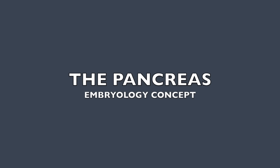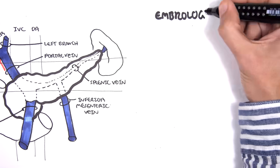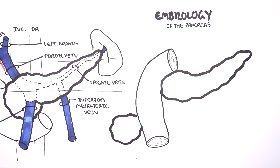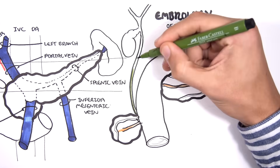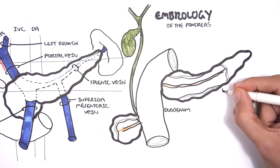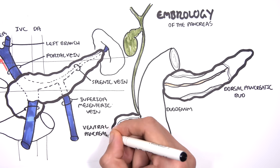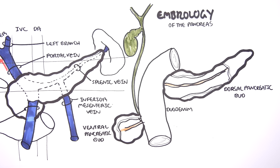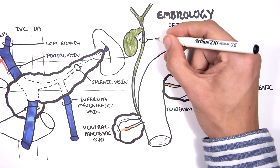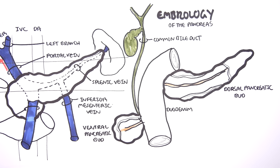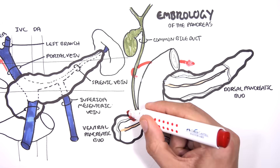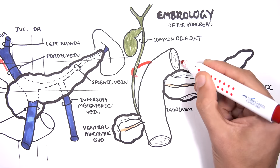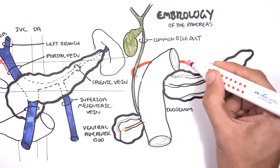Now let's look at the embryology of the pancreas. There is a dorsal pancreatic bud and a ventral pancreatic bud, with the biliary system and common bile duct draining into the main pancreatic duct at the ventral bud. During embryological development, the gut normally rotates, and the ventral pancreatic bud rotates around, carrying the bile duct with it.